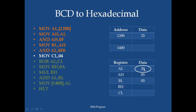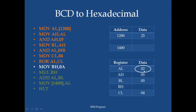What we need is 02, so we need to perform a rotate operation. The number of rotations is stored in the CL counter as 4. After rotating, 20 becomes 02.